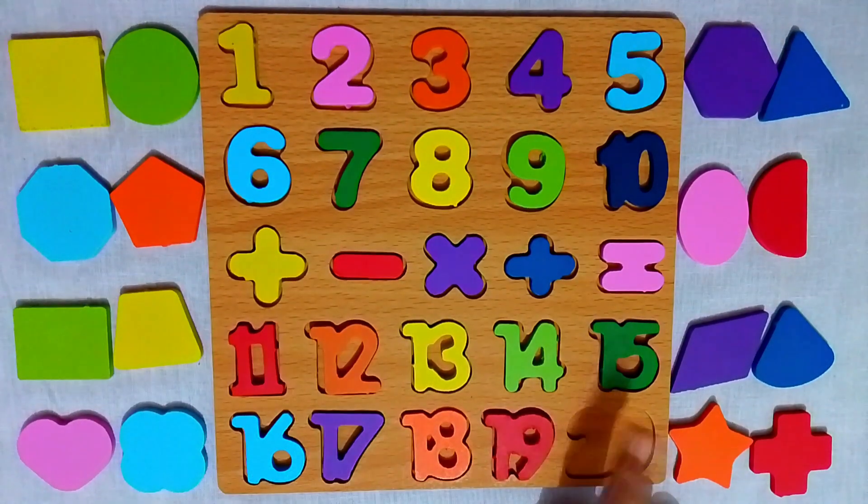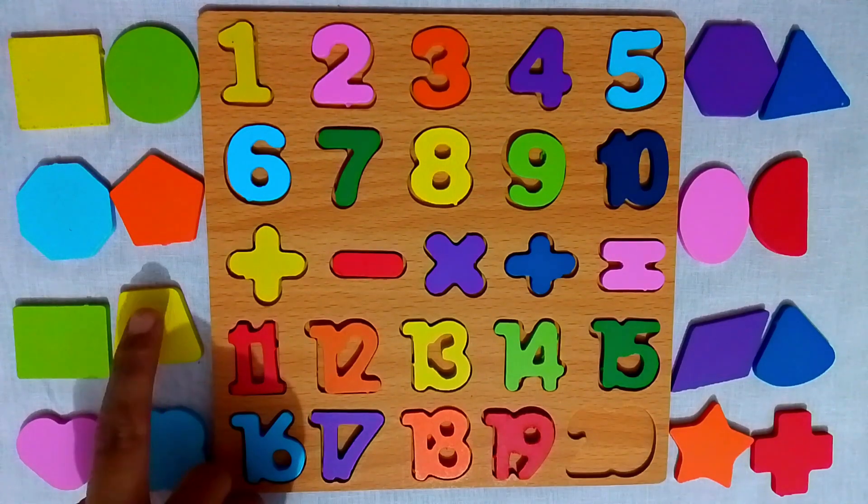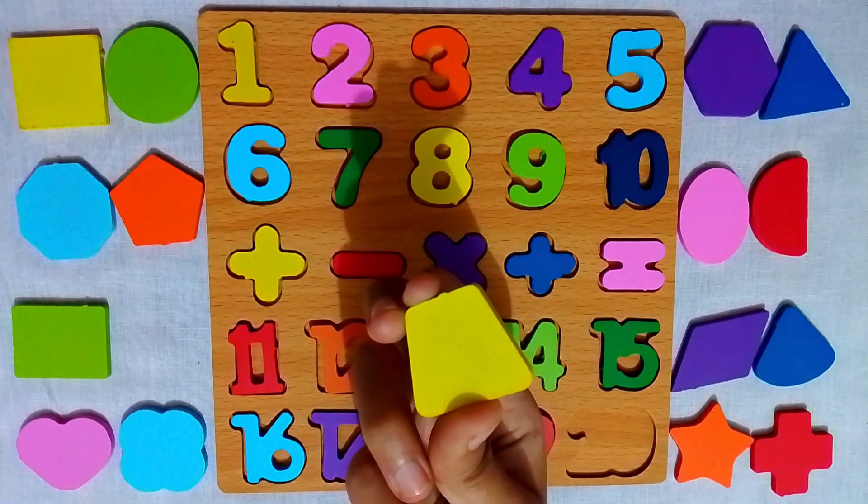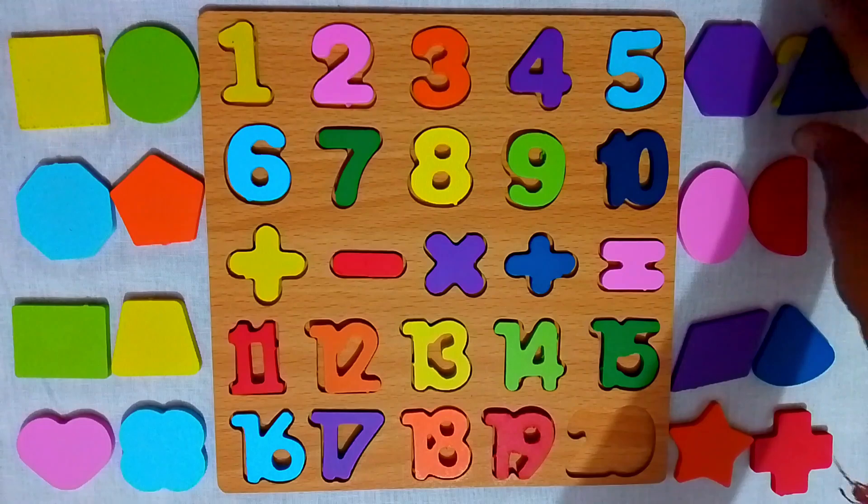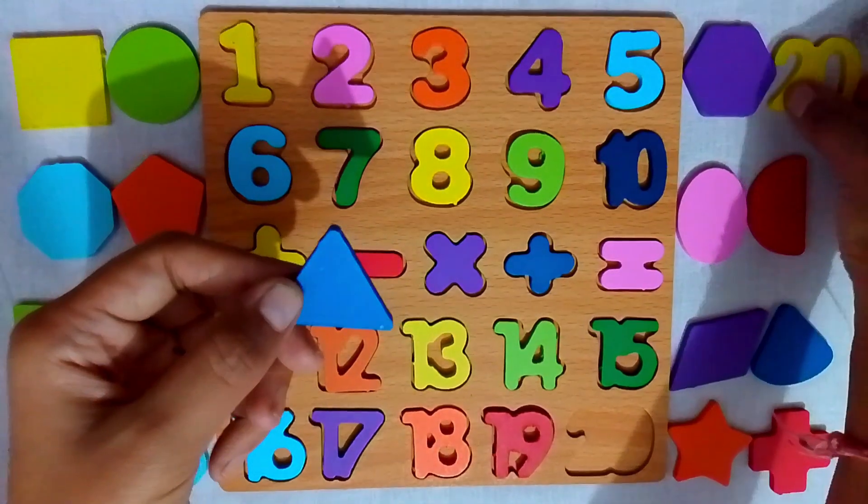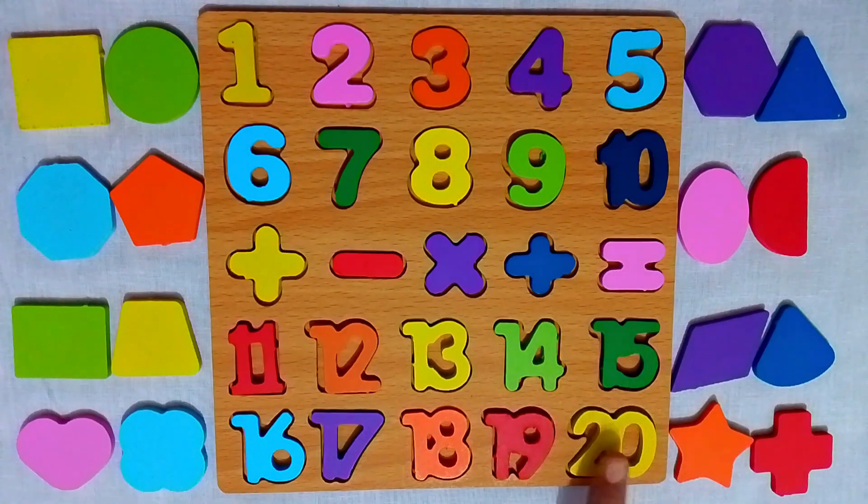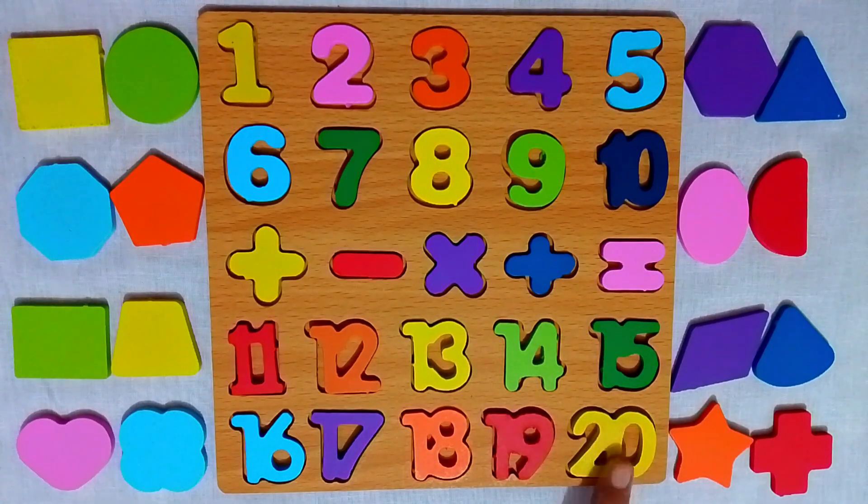And our last number is 20. Maybe inside the trapezoid. Nope, not here. Let's try the big triangle. Yes! Number 20 is here. And finally, number 20 takes its place, right after 19. Perfect.